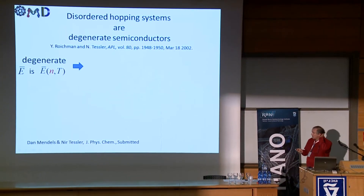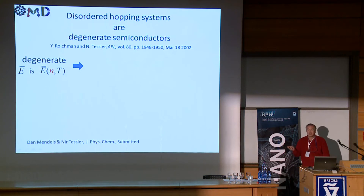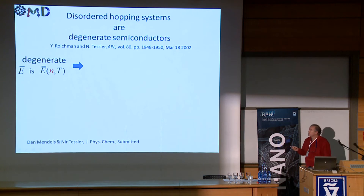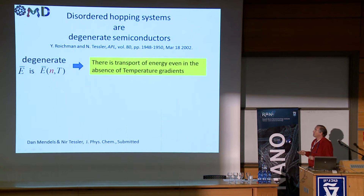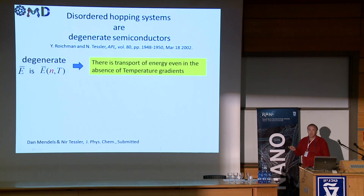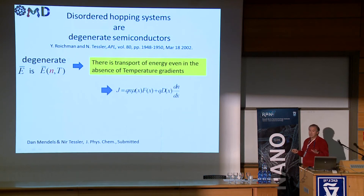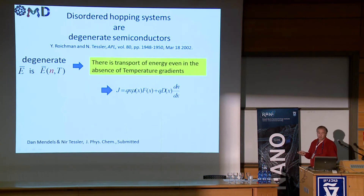One of the things we got out of this kind of model is the realization, some ten years ago, that all these organic materials tend to be degenerate semiconductors. What we have learned recently is that when a semiconductor is degenerate, the average energy of the charges changes with density — this is built into the generality of the system. So basically when the system is degenerate, the carriers carry with them an extra energy which no one accounts for.